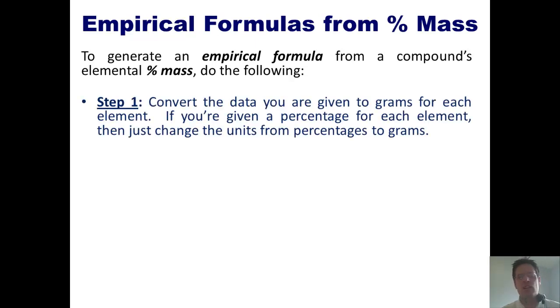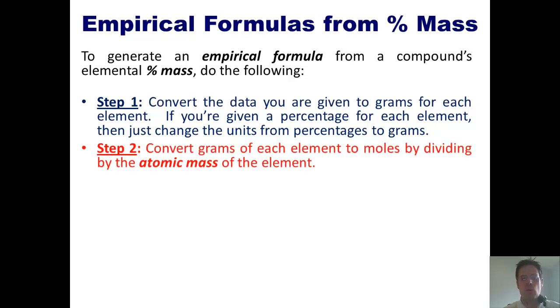Step one, convert the data you're given to grams for each element. Now if you're given a percentage for each element, then just change the units from percentages to grams. Two, convert grams of each element to moles by dividing each of the amounts that you calculated in step one by the atomic mass of each element.